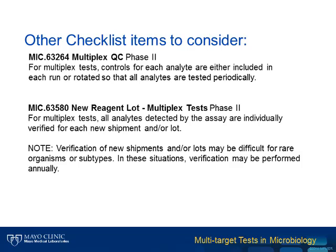For new lot verification, a good strategy is to run two controls that are each positive for half of the analytes, such that each analyte has a positive and a negative control. For instance, control mixture A may contain organisms 1, 3, 5, 7, and 9, and control mixture B would contain organisms 2, 4, 6, 8, and 10. That way, within two runs, you've tested positive and negative for each target. Also, for new lot verification, each analyte must be tested with each new lot to assure that each target is working.